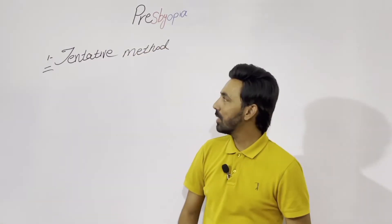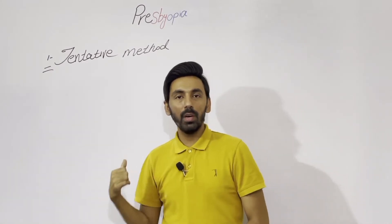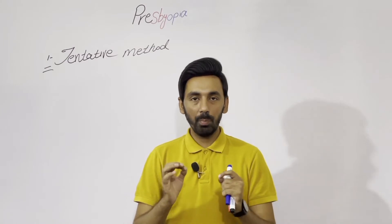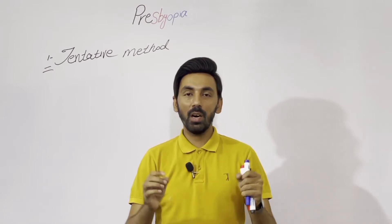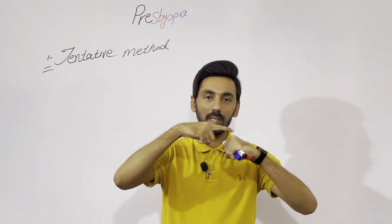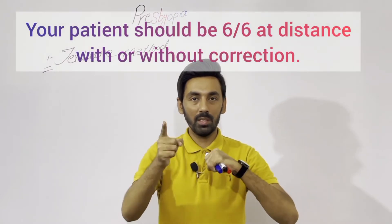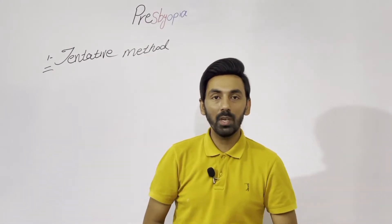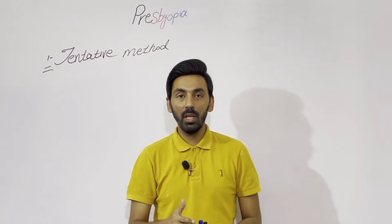Now we will discuss the tentative method, which is the first method for the correction of presbyopia. Before applying the tentative method, make sure that your patient is 6/6 — that is, emetrope — meaning the patient's light rays are exactly falling on the sensitive layer of the retina at distance. If you want to prescribe a near add, first make sure your patient does not need any distance prescription.